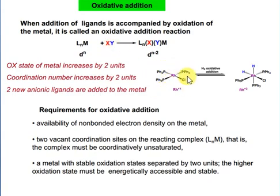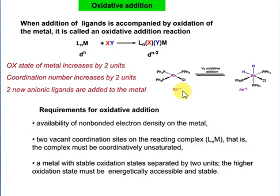In this particular example, the central metal atom — rhodium — has a coordination number of four. After addition of H2, coordination number becomes six. The oxidation state was +1 and it became +3, because the metal has given two electrons to the coordinating anionic ligands.